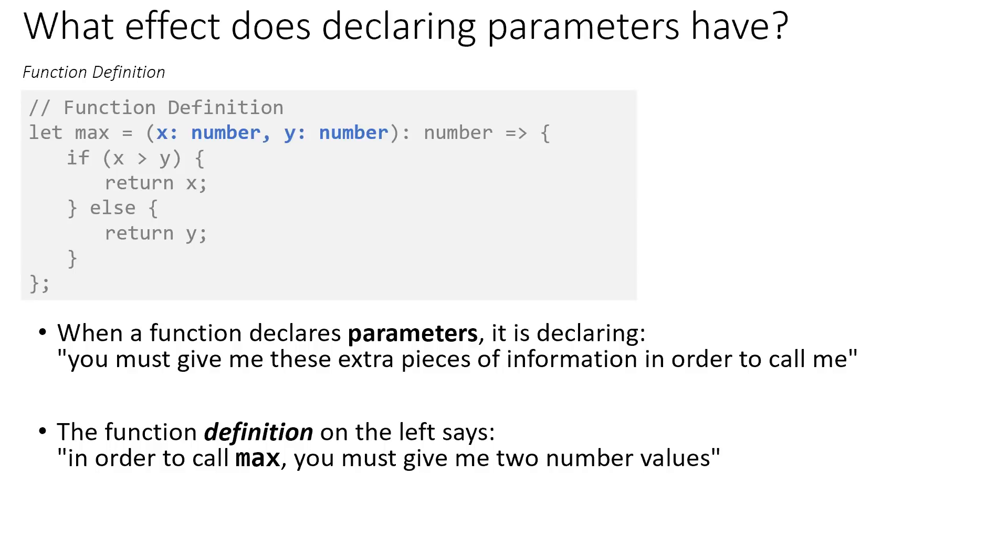When you declare parameters, you're requiring anyone who calls this function to give you these extra pieces of information. The programming language will prevent you from calling a function who declares parameters with any other parameters besides those it specifies.